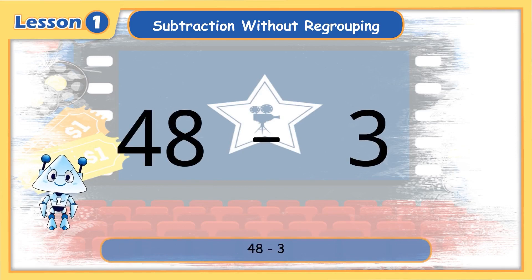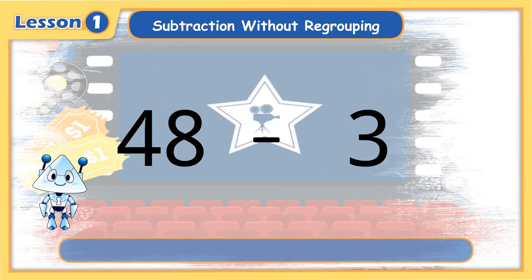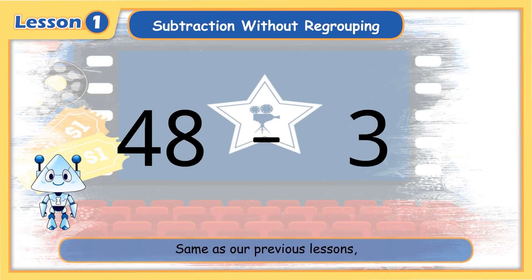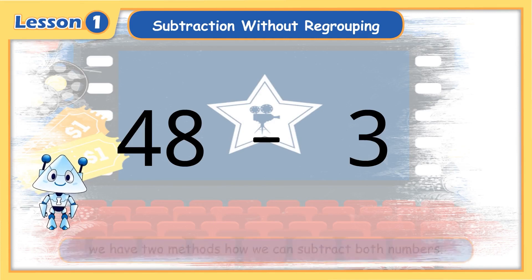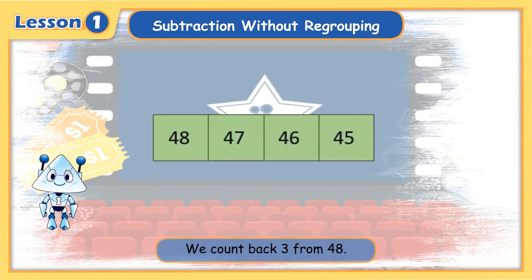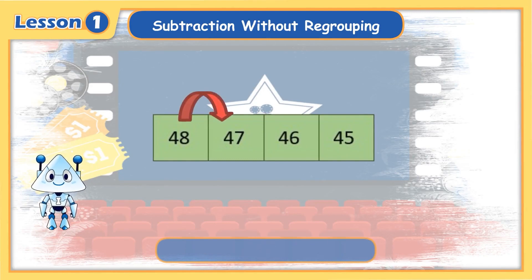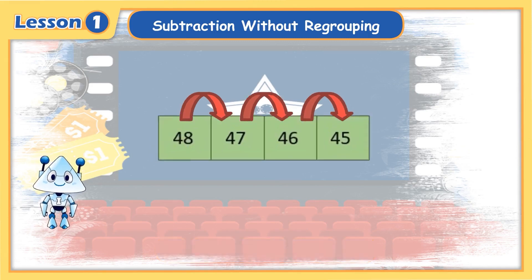48 minus 3. How do we subtract the two numbers? Same as our previous lessons, we have two methods. Here's the first method: we count back 3 from 48. 47, 46, 45. 48 minus 3 equals 45.